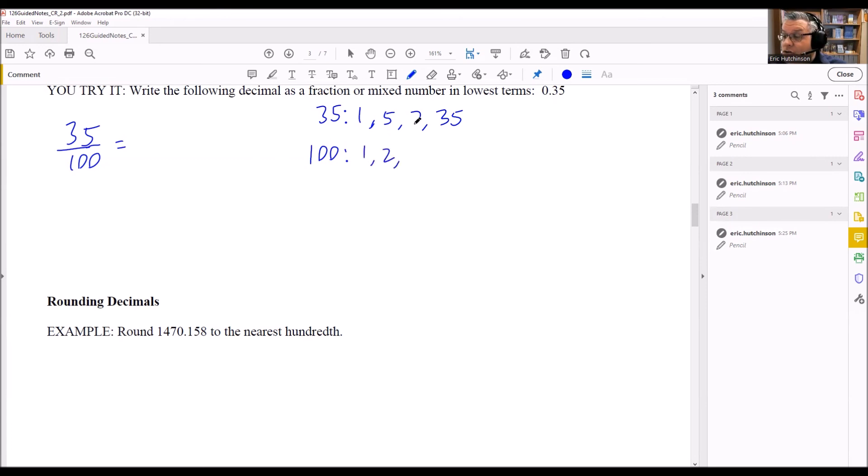For 100, we have the same list that we had before. So we have 1, 2, 4, 5, we have 10, 20, 25, 50, and 100. Find the largest one. Well, the largest one is just going to be 5.